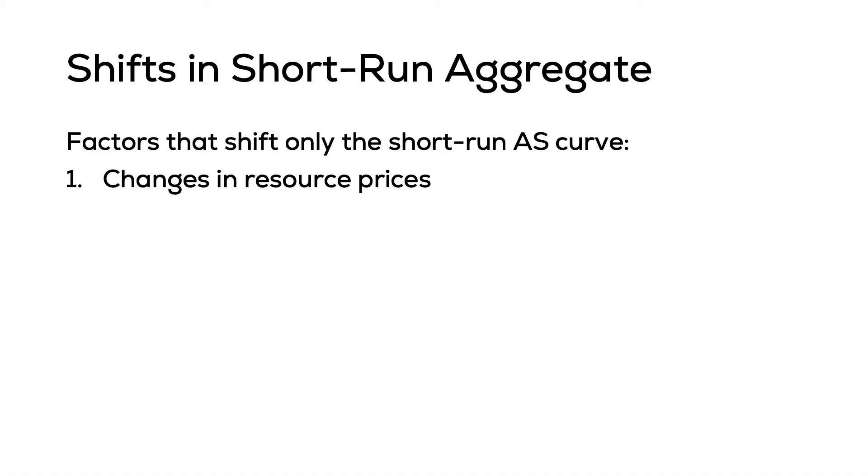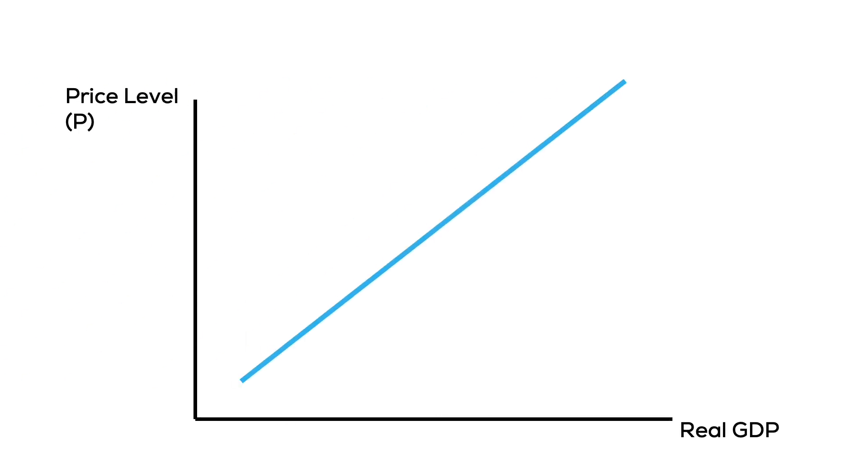The first shift factor is a change in resource prices. Here we're looking at a change in one price in the economy and not all overall prices. The price level in the economy is unchanged, but resource prices can adjust. If resource prices are cheaper, it will lead to an increase in our production ability. Our short-run aggregate supply curve is going to shift to the right.